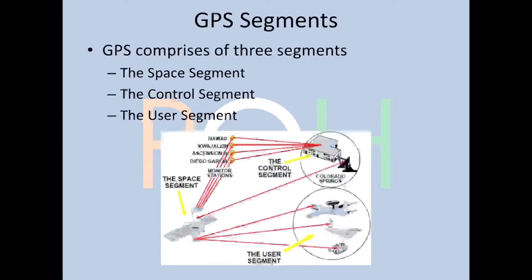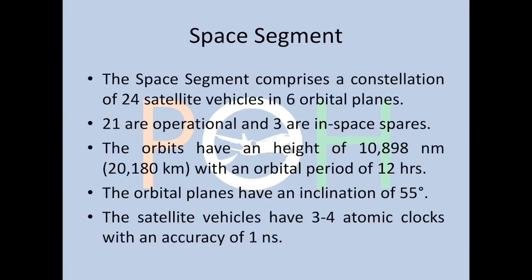There are three GPS segments: the space segment, control segment, and user segment. The space segment comprises a constellation of 24 satellite vehicles in six orbital planes — 21 are operational and three are spare. The height is at 10,898 nautical miles, approximately 20,000 kilometers, with an orbital period of 12 hours. The orbital planes have an inclination of 55 degrees.